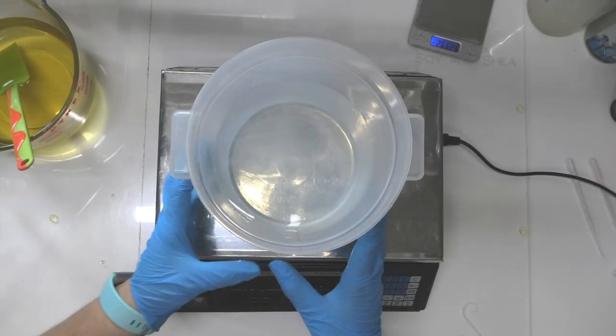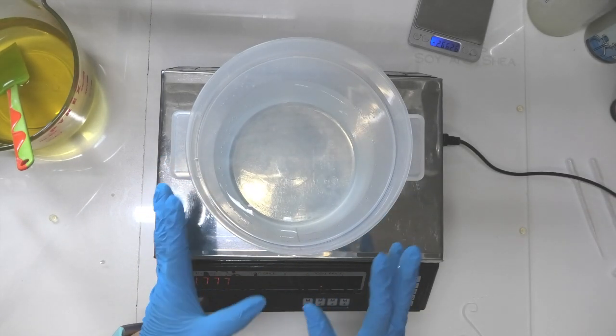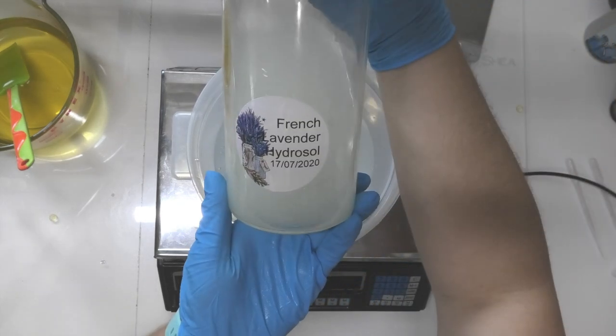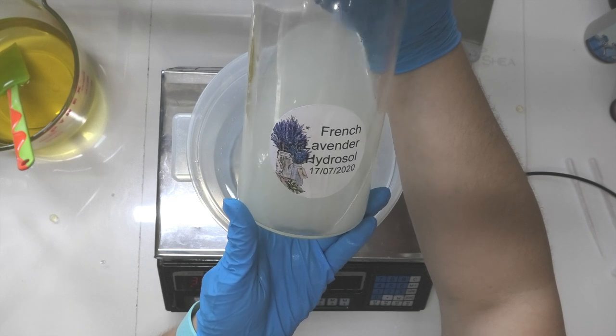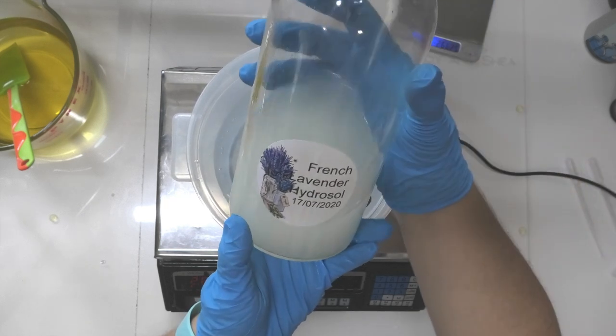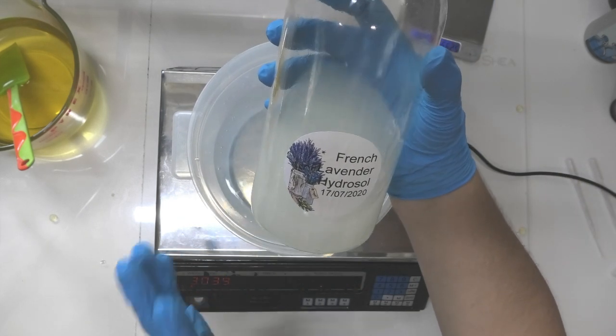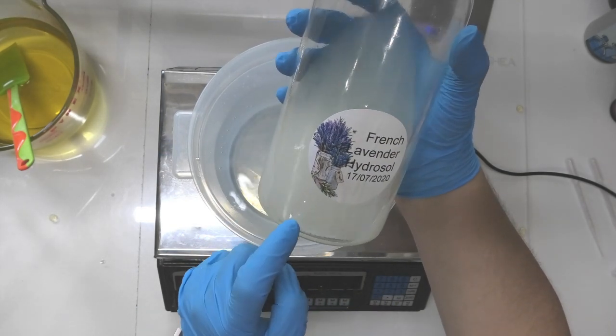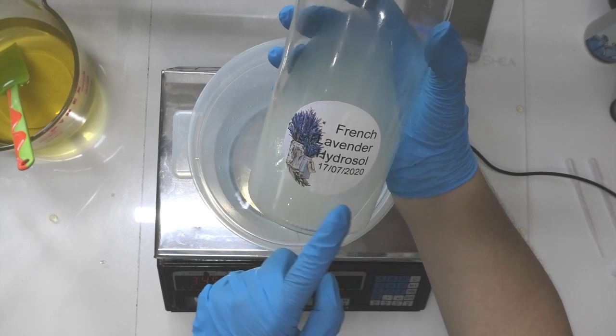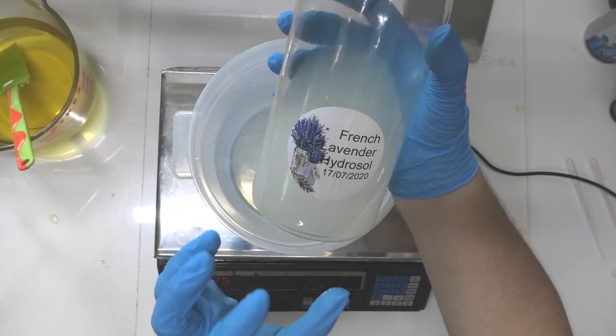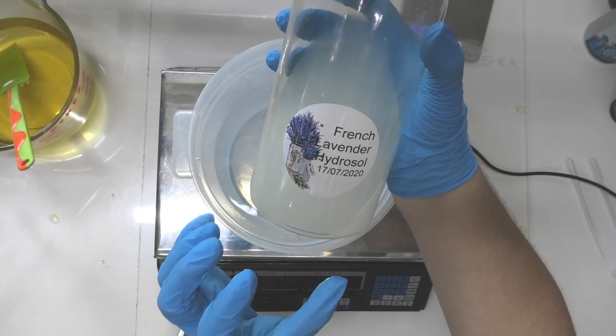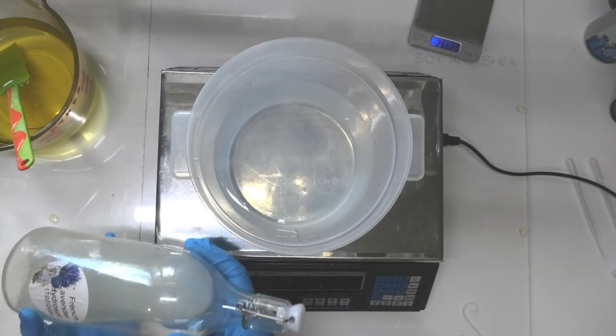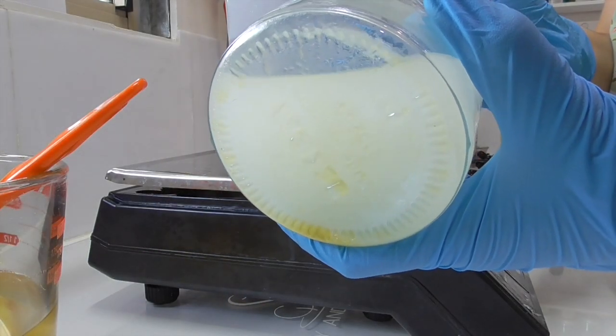And then we're going to add in our water component. So I'm using some distilled water. Now you can just use distilled water as the component in here, but to make this a little bit extra special, what I like to do is add in some lavender hydrosol. This particular hydrosol I make myself, but you can actually purchase any of the hydrosols from most bath and body suppliers. This is actually cloudy because I also add into my hydrosol a little bit of preservative just to make sure that it keeps nice and fresh.